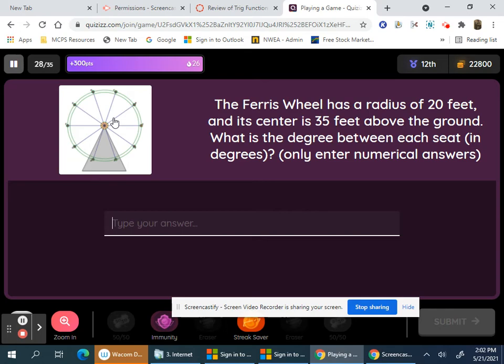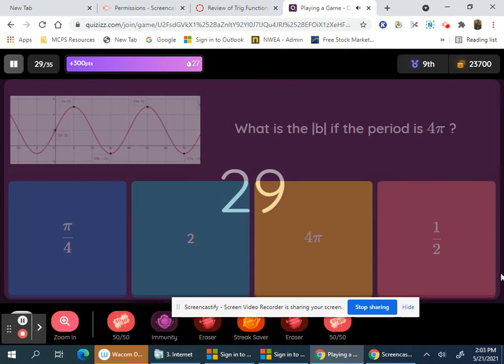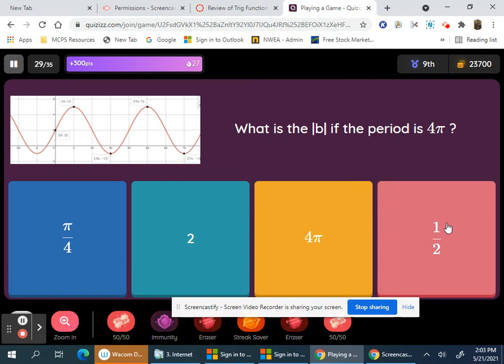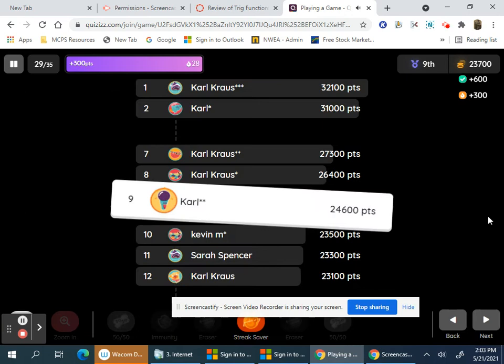20 feet, 35 is the degrees, so there's 10 spokes here. 360 divided by 10 is 36. What's b if the period is 4 pi? So 2 pi divided by 4 pi is 1 half.